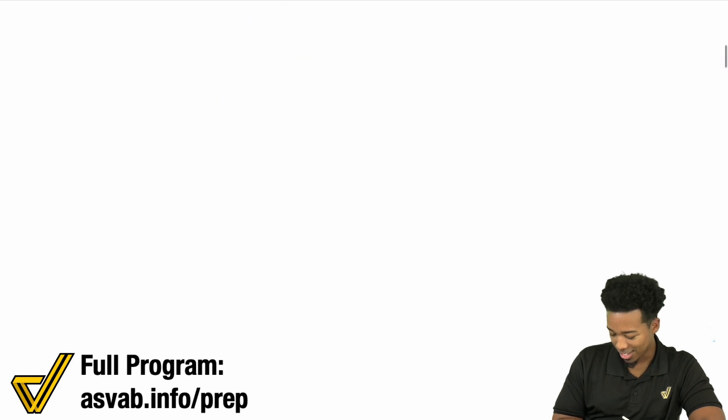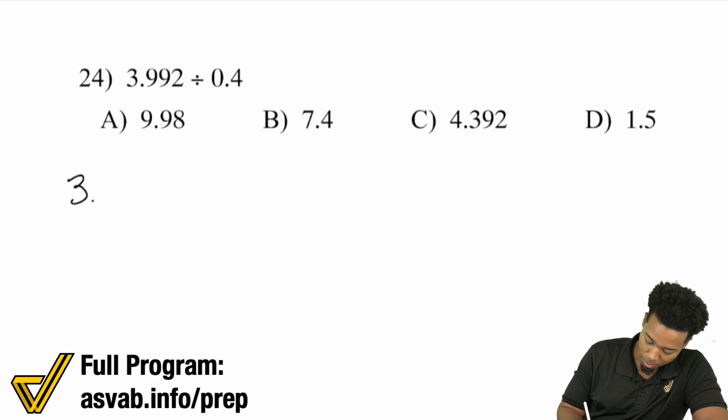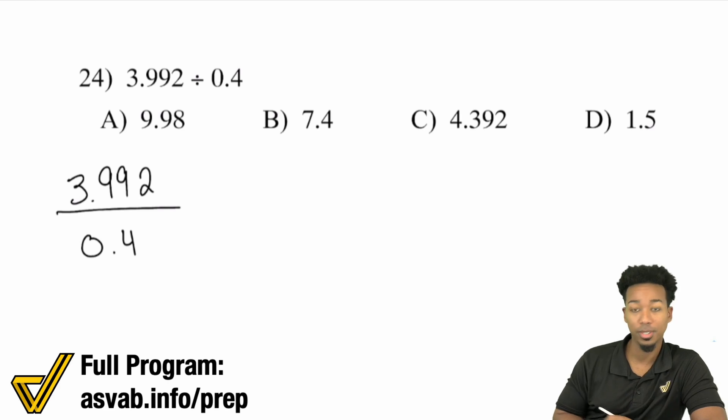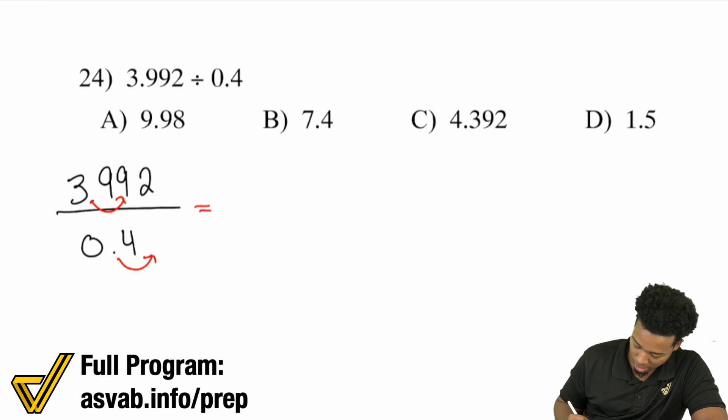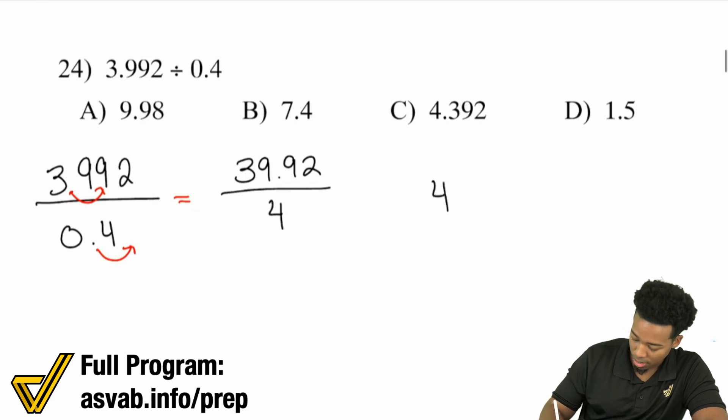Let's do this one. 3.992 divided by 0.4. Let me show you. When you're dividing by a decimal, you don't want to. Move that decimal place over for that divisor, the number that you're dividing by, over one time. And once you do that, just make up for it over here one time. So this becomes 39.92 divided by 4. That's what that turns into. This is easier to see.